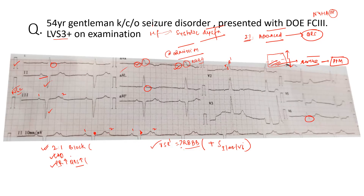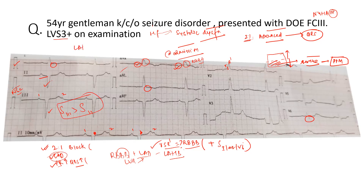One thing that is against RBBB is the left axis deviation. It's very easy to call it RBBB plus left axis — which we usually associate with left anterior fascicular block. But a patient with severe LVH can also have left axis deviation. The S in lead three is usually more than the S in lead two. This is an important criterion for left anterior fascicular block: an RS pattern in inferior leads and a nice R wave in lateral leads such as AVL.